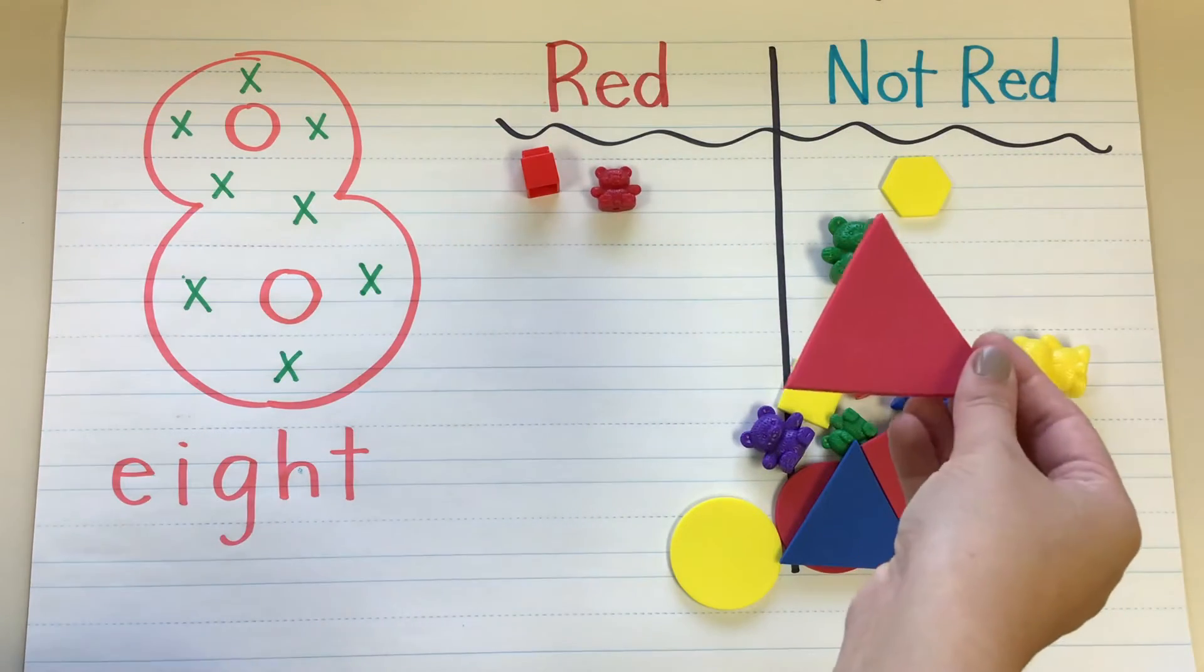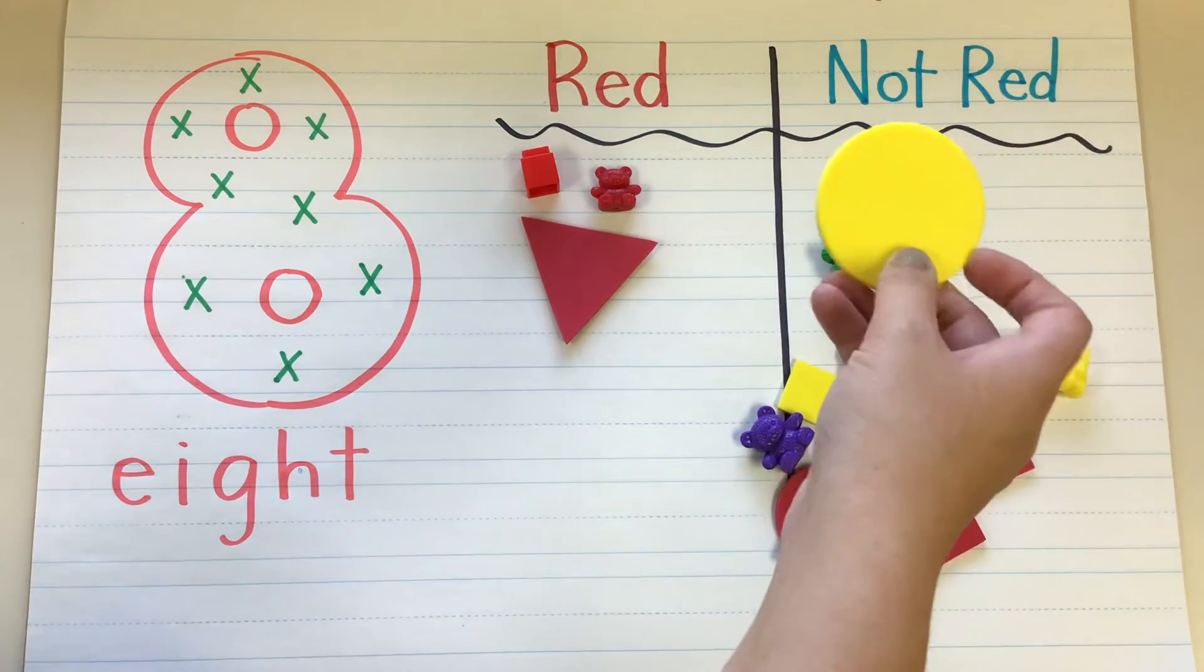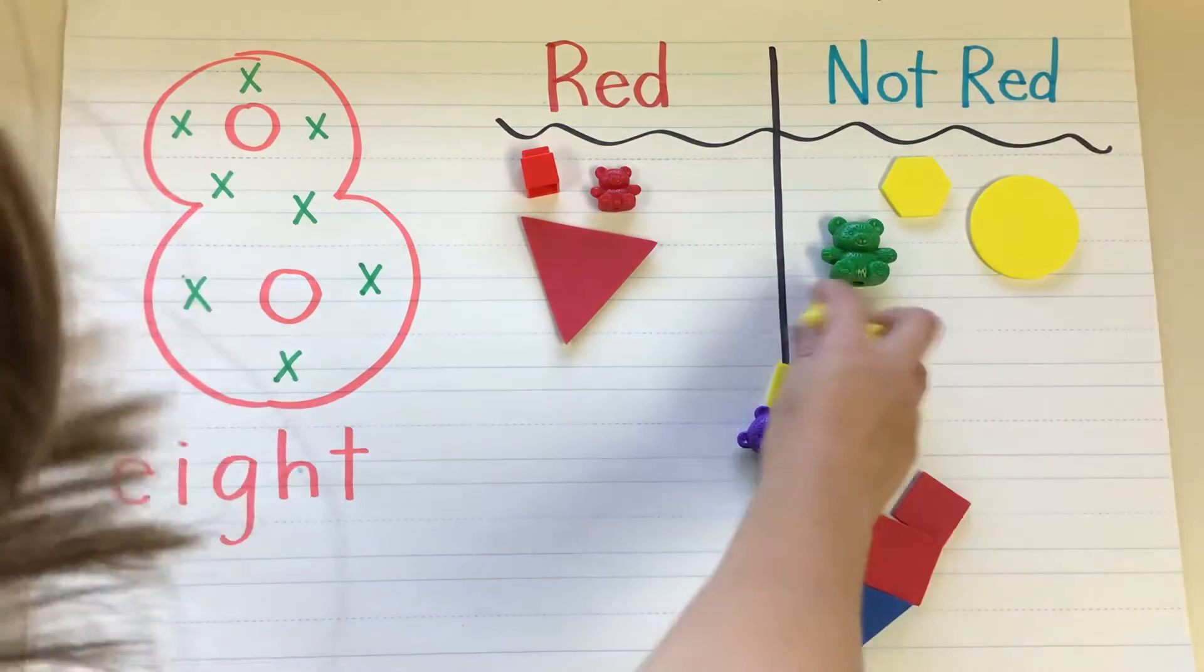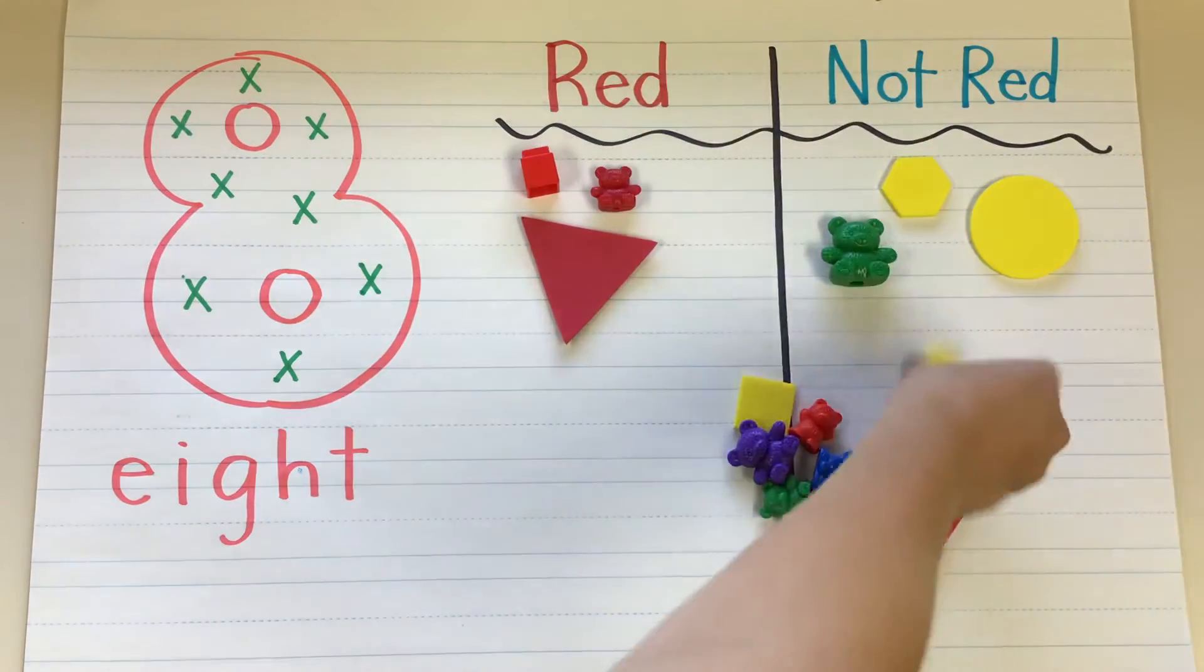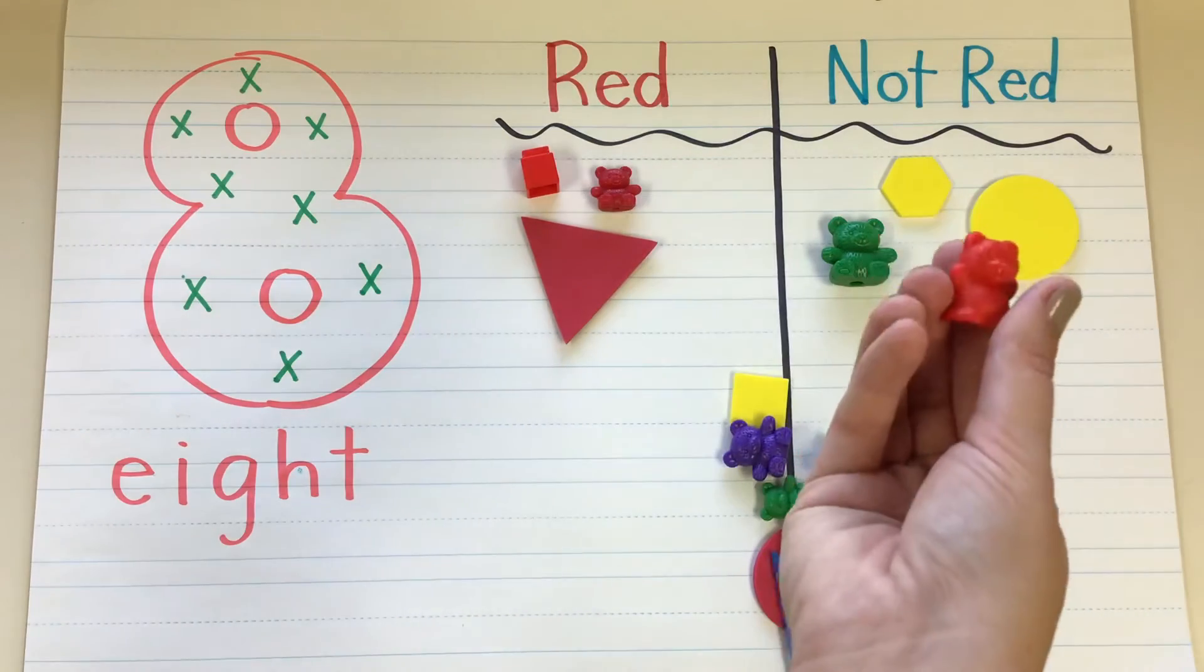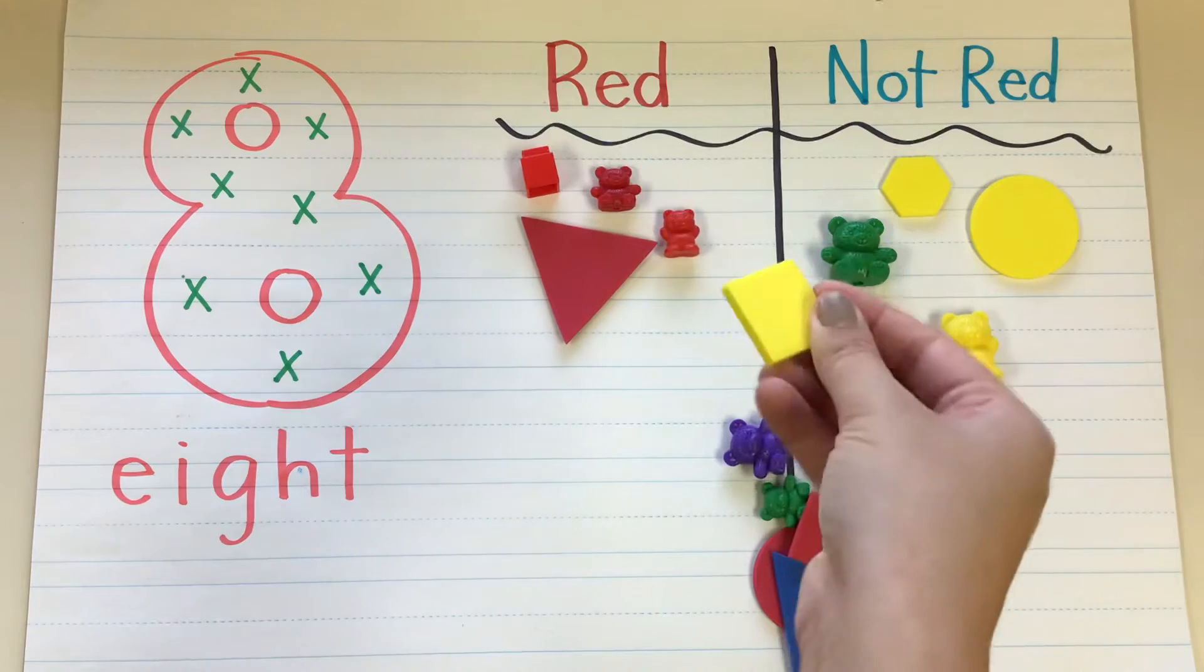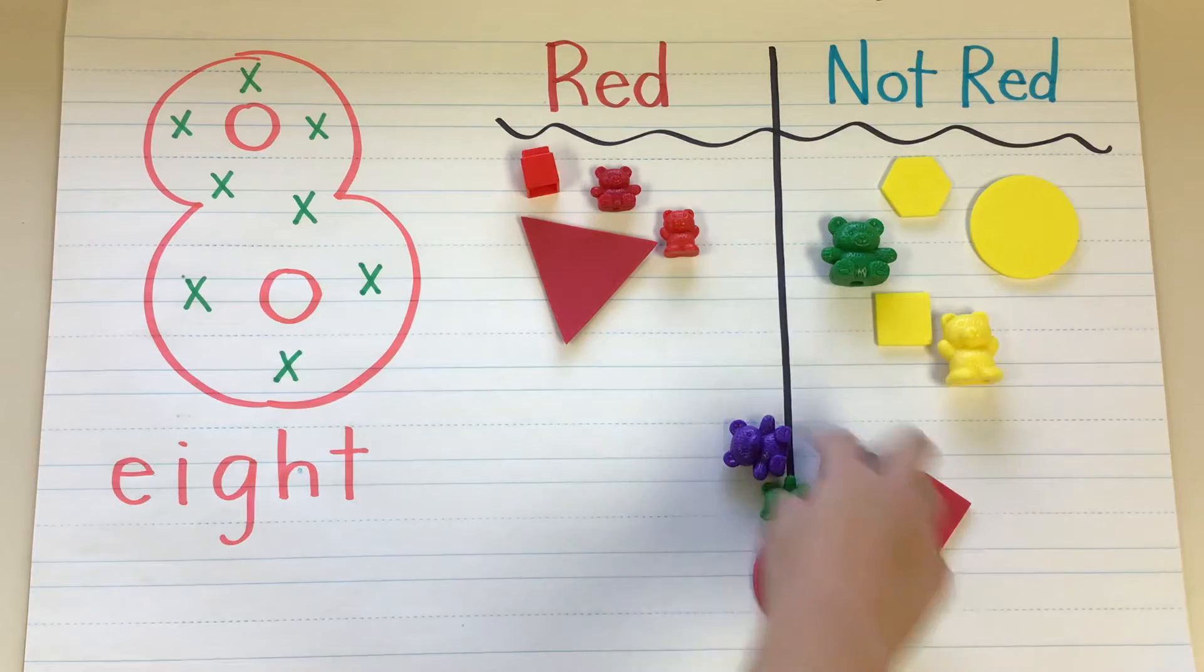Red or not red? It's red. Red or not red? This isn't red. So it's going over here. What about this one? Not red. This one? Red. This one? Does it match those colors? No. So it's going to go over here with the not red.